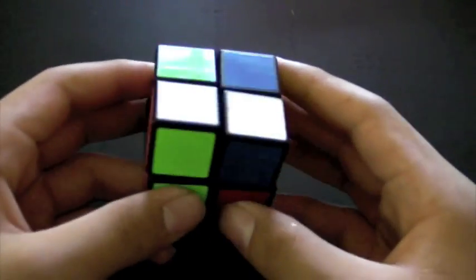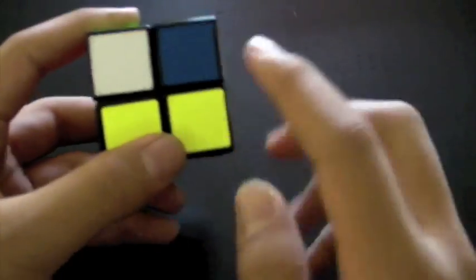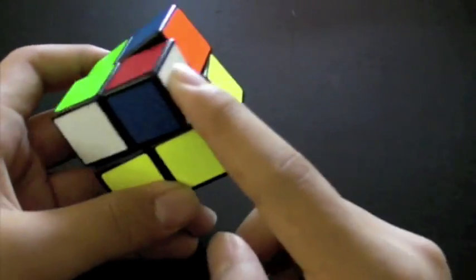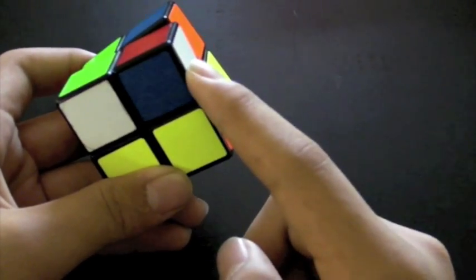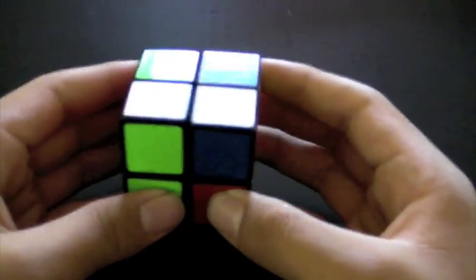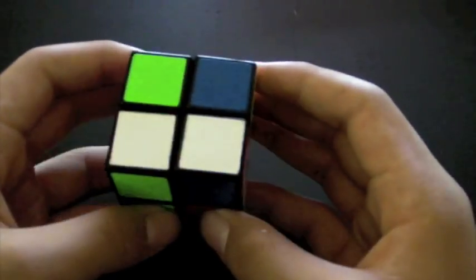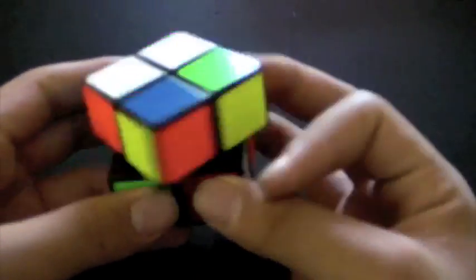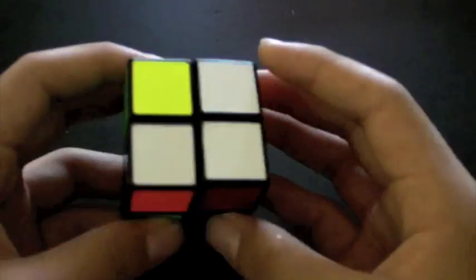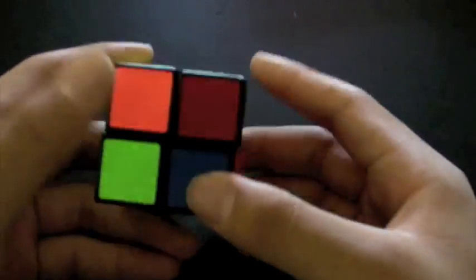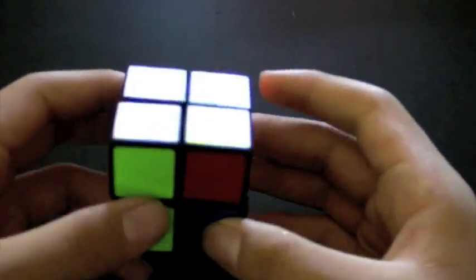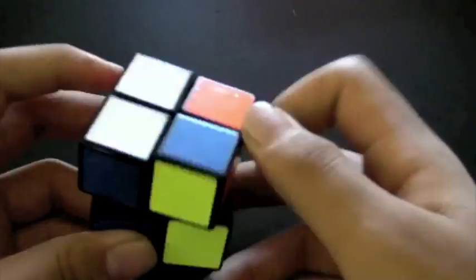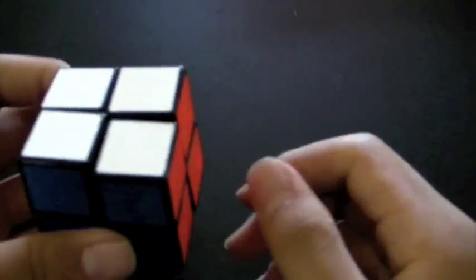So this method is called the Guimond method. Basically, you make three-quarters of a face of opposite colors while you make sure that the last piece is in the right layer. Then you do one of 16 algorithms that would orient everything, but they would still might be in opposite layers. Then you would do the separation step, where you just bring everything into its correct layer, and then you go and permit everything using a PBL algorithm.